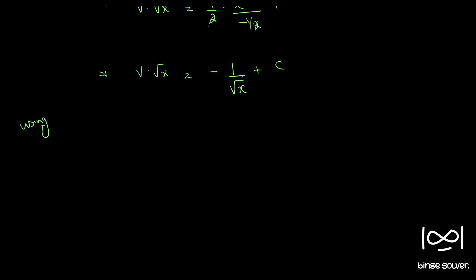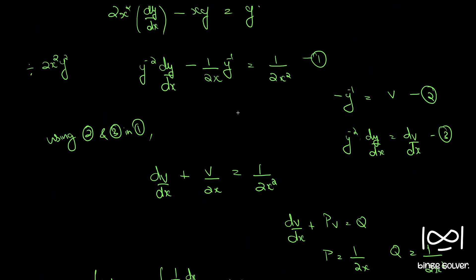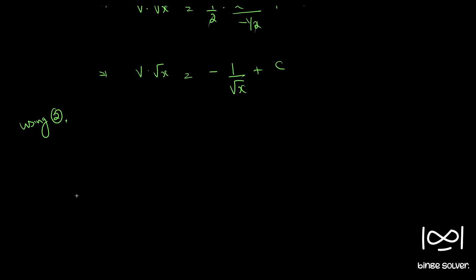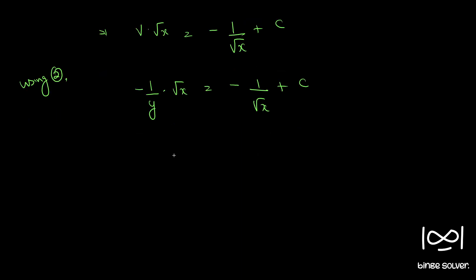Using equation 2, v equals minus 1 by y. Substituting, we have minus 1 by y times root x equals minus 1 by root x plus c. Multiplying throughout by minus root x gives x by y equals 1 plus c1 root x, where c1 equals minus c is another arbitrary constant. So our final answer is x by y equal to 1 plus c1 root x.